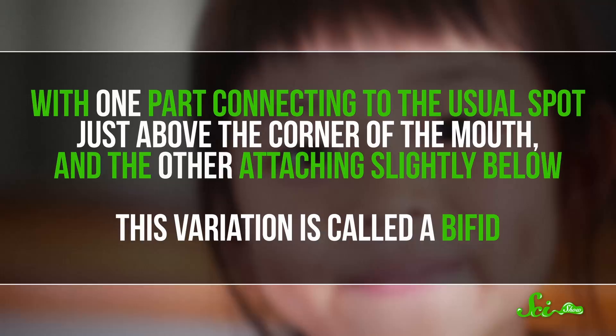When this happens, the lower section also sometimes connects to some cheek skin. So when bifid zygomaticus major muscles contract, it's thought that the lower part pulls on that skin, causing it to buckle, creating a dimple.